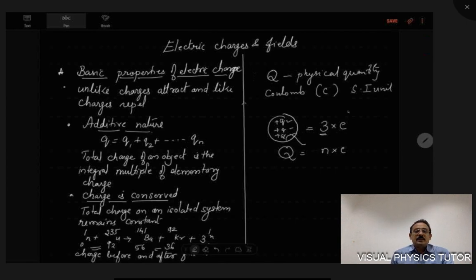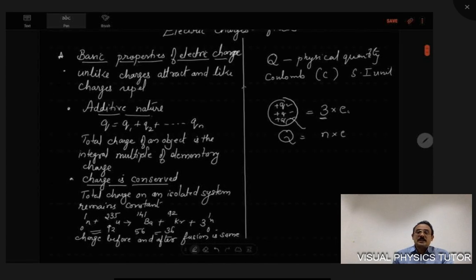The total charge on an isolated system remains constant. If you look at the equation where a uranium isotope 235U92 is bombarded with one neutron, it will yield barium 141Ba56 plus krypton 92Kr36 plus three neutrons. We can see that the charge before and after the fusion is the same.